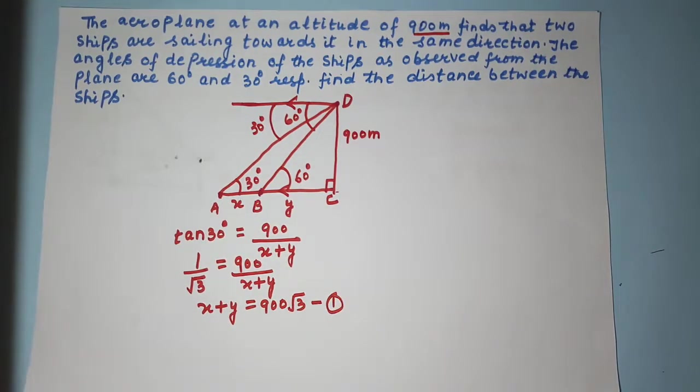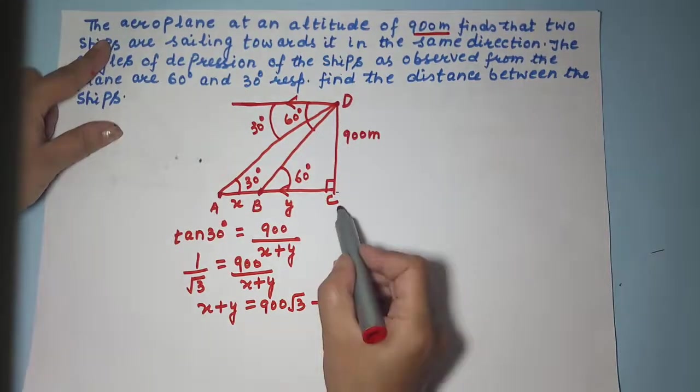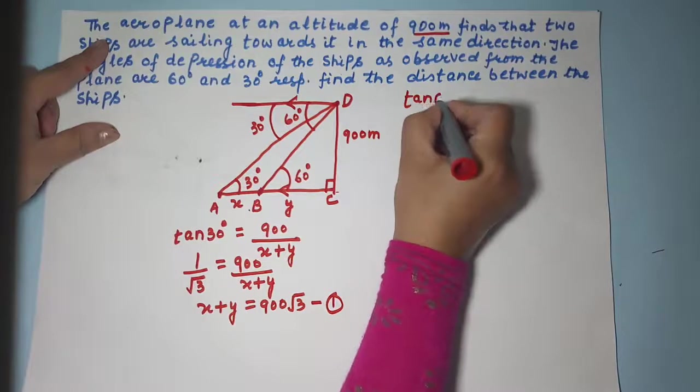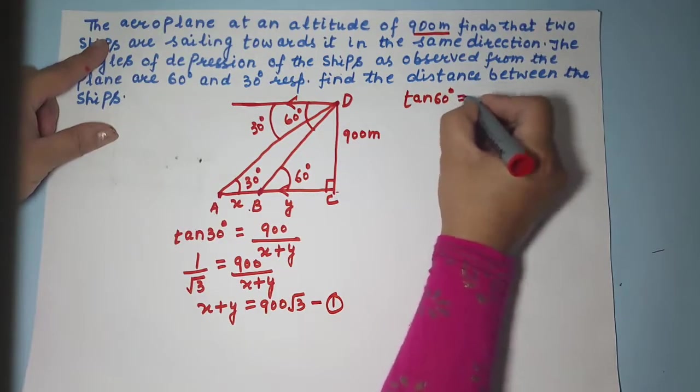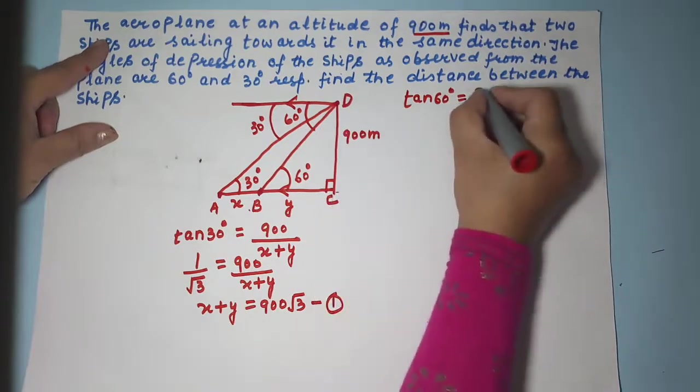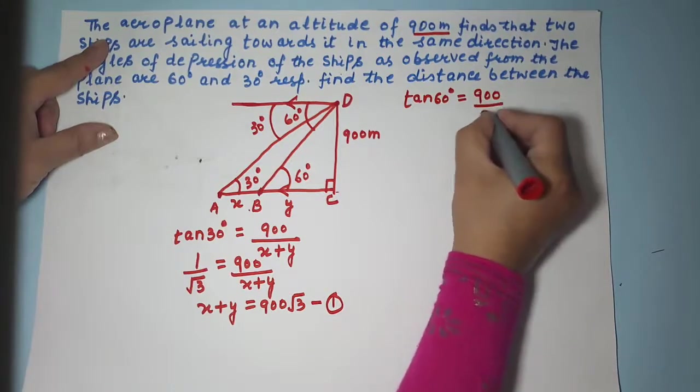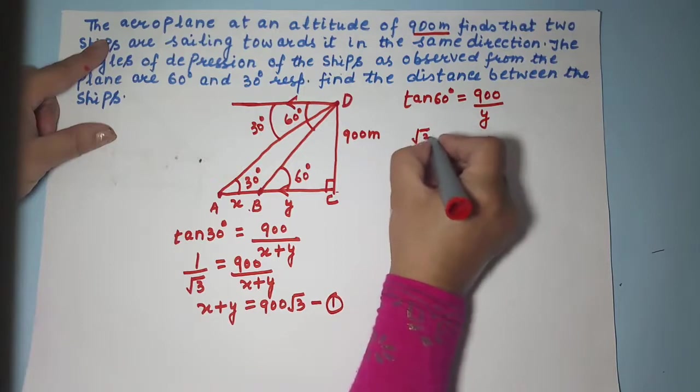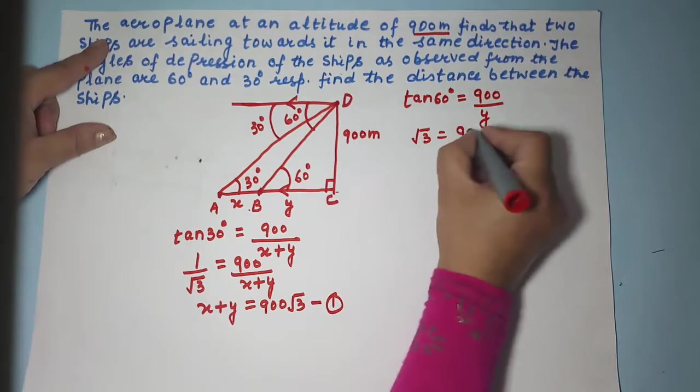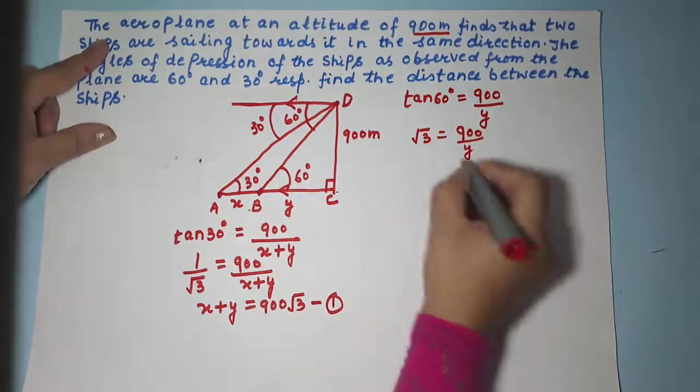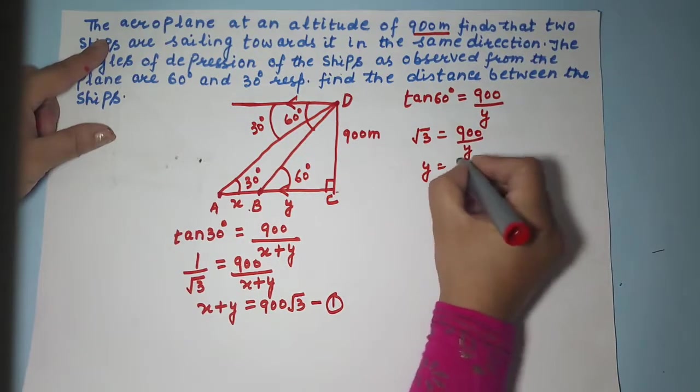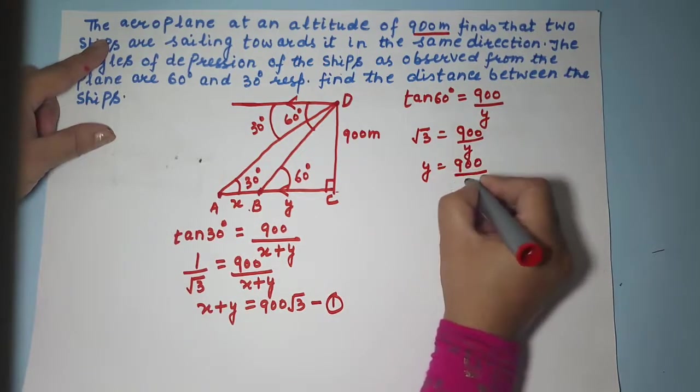Now let's go to triangle DCB. In this triangle tan 60 degree is equal to opposite upon adjacent. Opposite is 900 and adjacent is Y. Now tan 60 is root 3. So tan 60 is root 3 is equal to 900 upon Y. So if you shift Y here and bring root 3 here you are going to get Y equals 900 upon root 3.